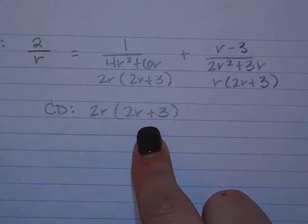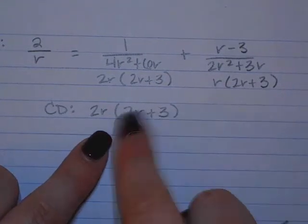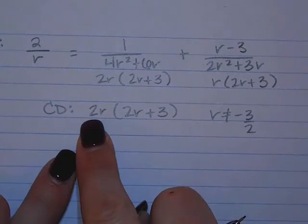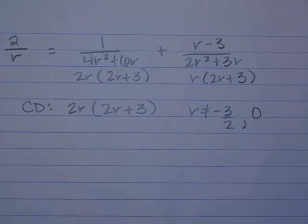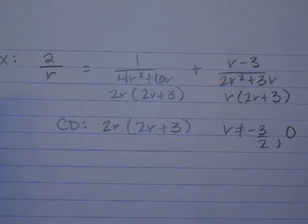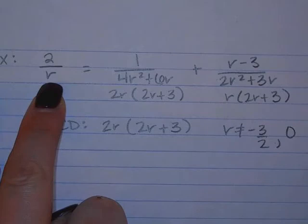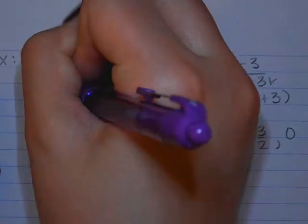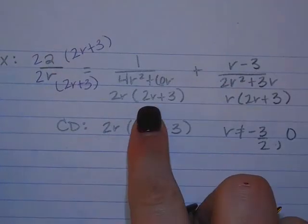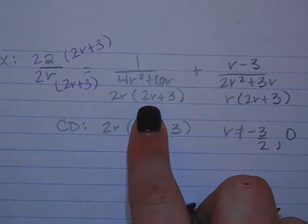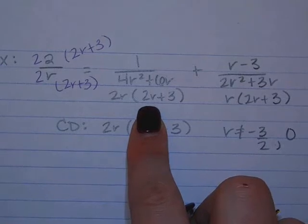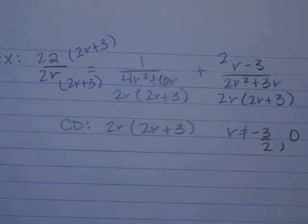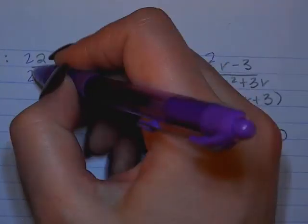What are the excluded values? Negative 3 halves. R cannot equal negative 3 halves. It's a fraction because of that 2. And then what's the other excluded value? Zero. So it can't be negative 3 halves. It can't be zero because of that R in the front. All right. So what do we need to do? This only has the R. What does it need? The 2 and the 2R. Okay. So it needs a 2. Now it's got 2R. And then it needs the parentheses 2R plus 3. Okay. Yeah. Do a separate number and then. Uh-huh. Because it's just multiplying. You're just going to multiply them. We've got 2R, 2R plus 3. So this one's good. What does this one need? 2. Okay. So we have our common denominator. We know what our excluded values are. We can go ahead and get rid of the denominators.